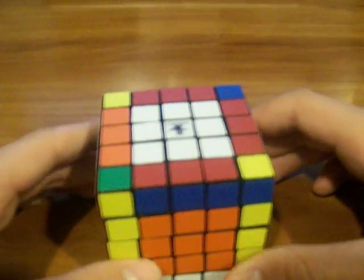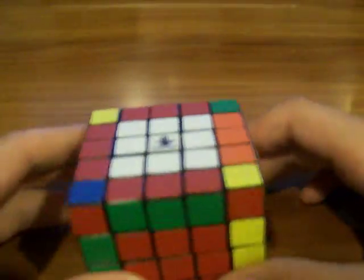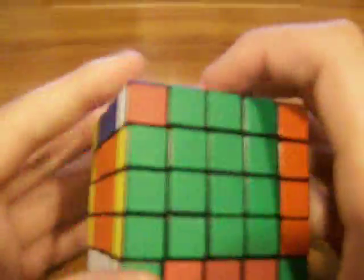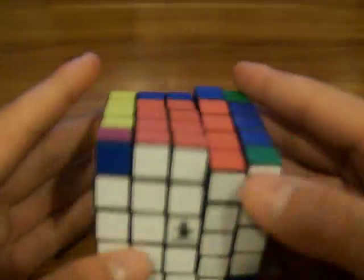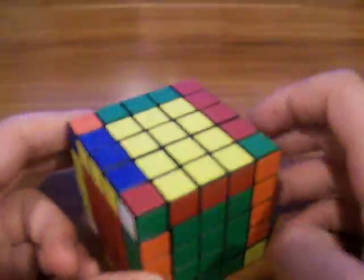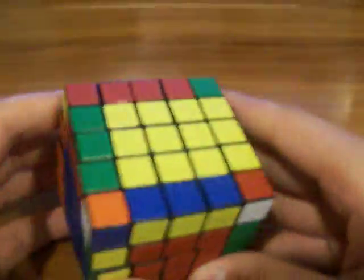Now, what you want to do is just solve it like a normal 3x3. So, now it's just a piece of cake to solve. I use Fridrich, so I'm just going to get my cross. Oh, I don't have it yet. Alright, this is what the cross would look like without that thing there. And now, I'm going to do F2L because that's Fridrich method.